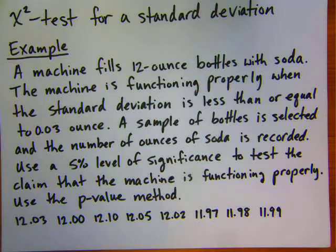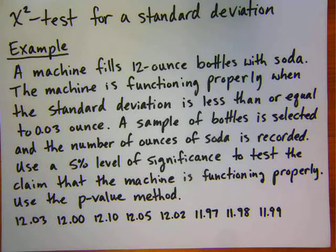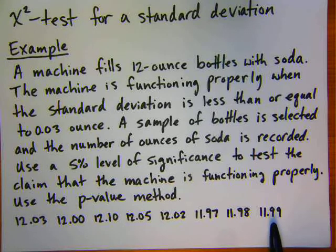Here's an example for the chi-squared test for a standard deviation. A machine fills 12 ounce bottles with soda. The machine is functioning properly when the standard deviation is less than or equal to .03 ounce. A sample of bottles is selected and the number of ounces of soda is recorded. We have sample data: 12.03, 12, 12.10, 12.05, 12.02, 11.97, 11.98, and 11.99.